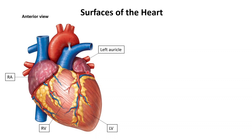The first surface we want to talk about is called the anterior surface. The majority of the anterior surface is made out of the right ventricle and partly made out of the left ventricle.